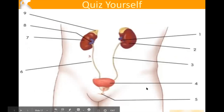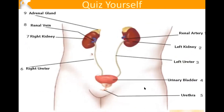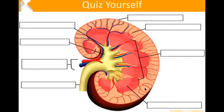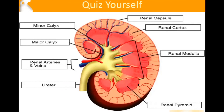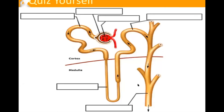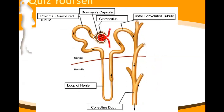If we were in class I would have you quiz yourself — can you name these parts? You can do this on your own later. You should be able to label the components of the kidney, the components of a nephron, and discuss what's happening in each of those structures. The PowerPoint is posted so you can reveal and check your knowledge.